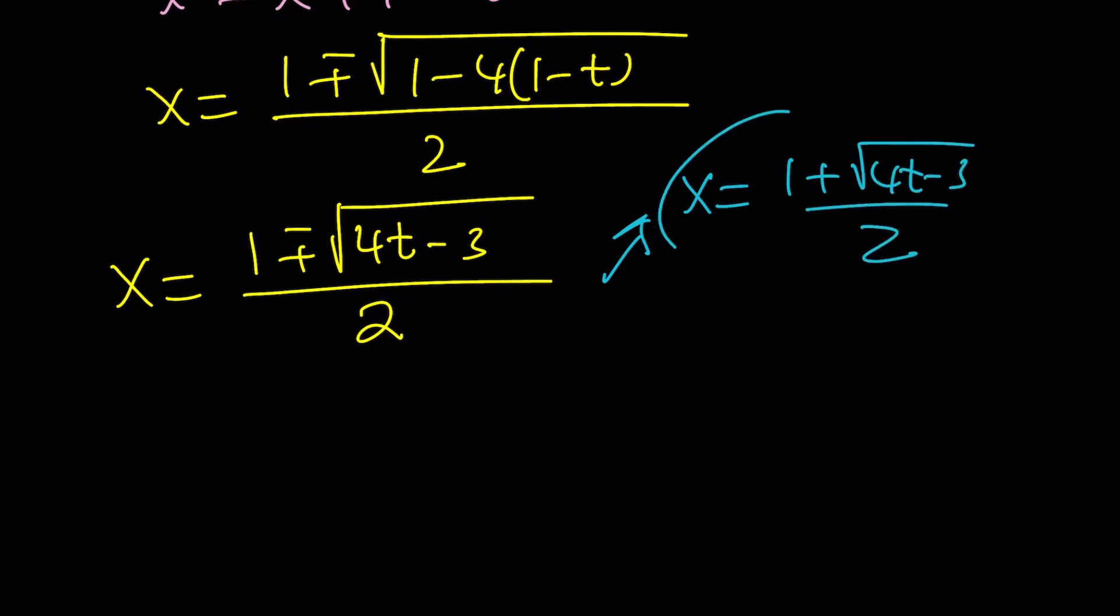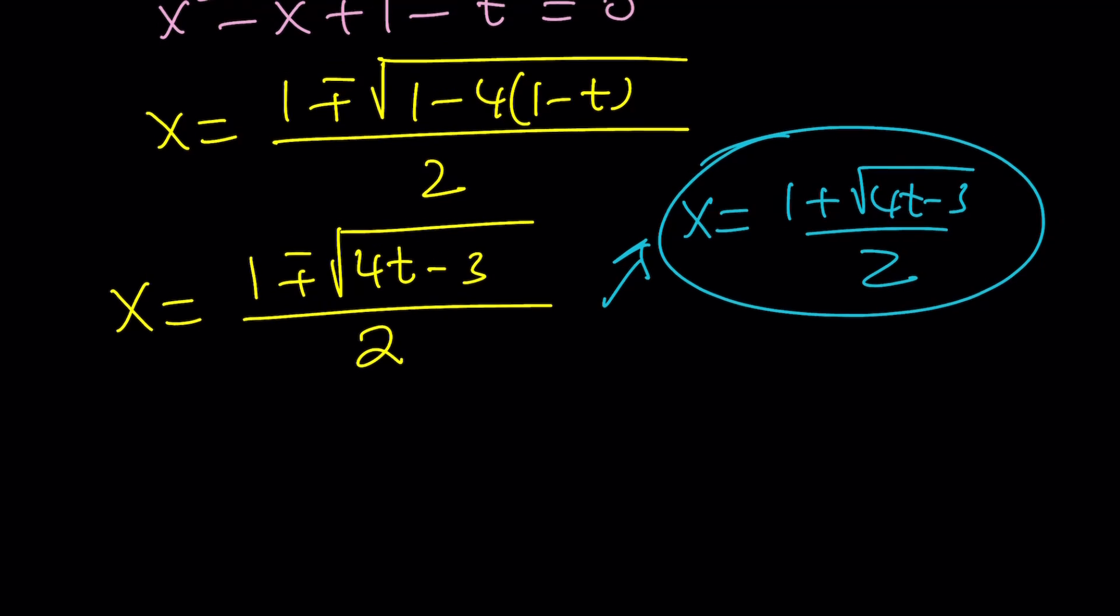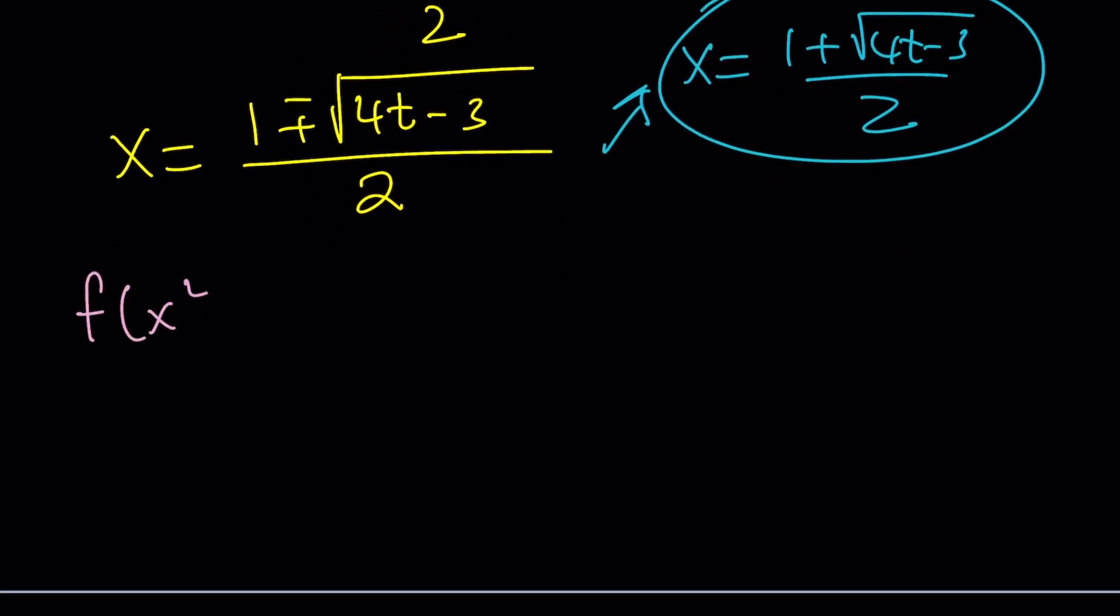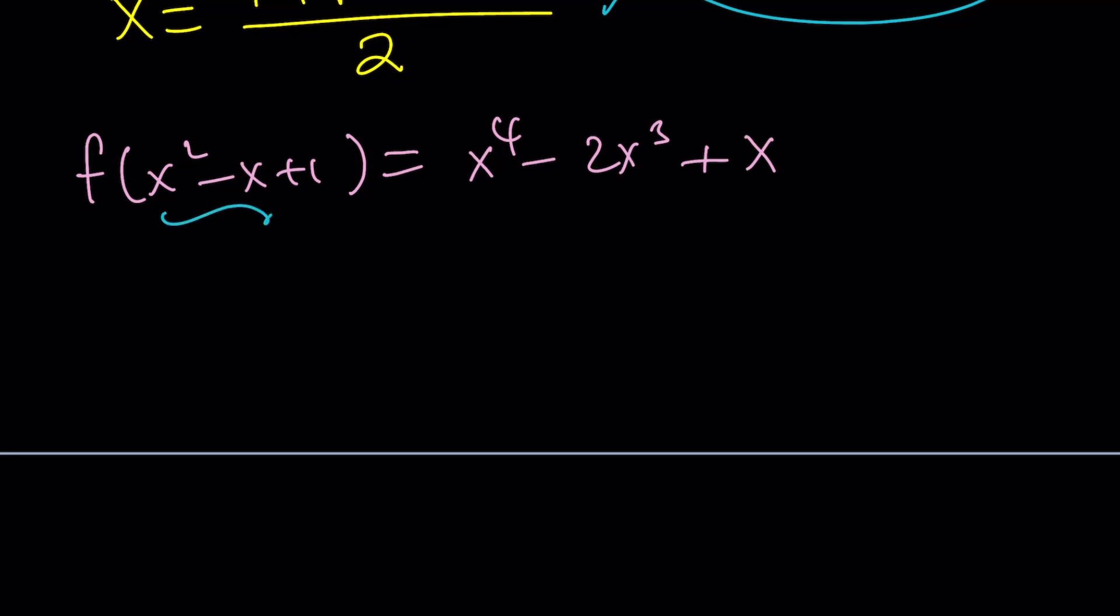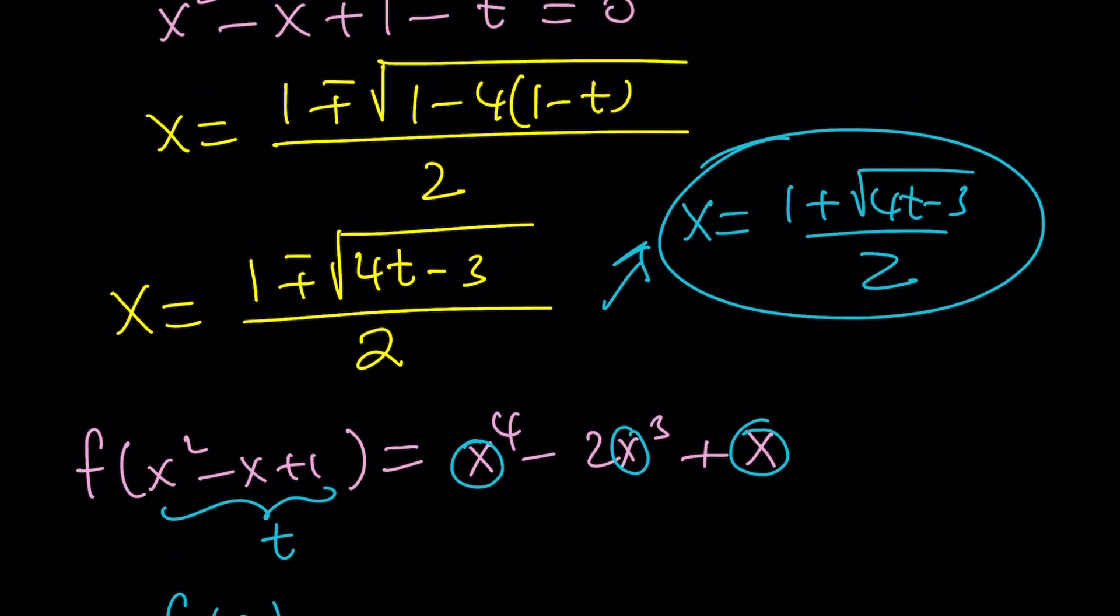Suppose, without loss of generality, x = (1 + √(4t - 3))/2. This is what I need to substitute for x. Now what would happen if you follow the other branch? You should get the same thing, but please check it out and let us know. Now let's go ahead and plug this in. What do I have? I have f(x² - x + 1) = x⁴ - 2x³ + x. Uh-oh, a quartic on the right hand side. Great. So we just set this whole thing equal to t, so that should be f(t), and now I'm replacing x with this right here. You see that? Okay, keep an eye.